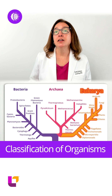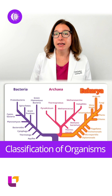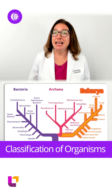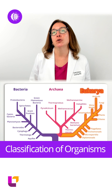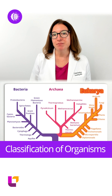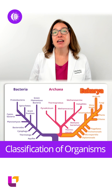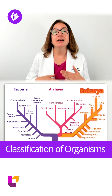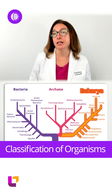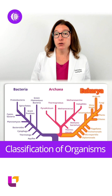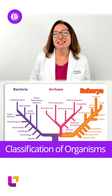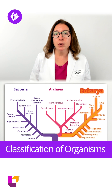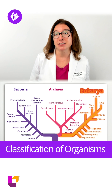Organisms that fall within the eukarya domain are all eukaryotes, which means that their DNA is enclosed in a nuclear membrane. Not all eukaryotes have a cell wall, but for those that do, it does not contain peptidoglycan. Examples of eukaryotes include plants, animals, fungi, protozoa, algae, and parasites.